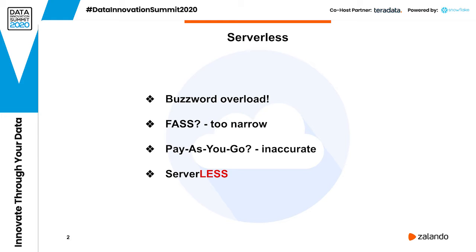There are several definitions that are being used at the moment. The most common one is defining serverless as functions as a service. This is pretty correct if you limit yourself only to offerings like AWS Lambda.